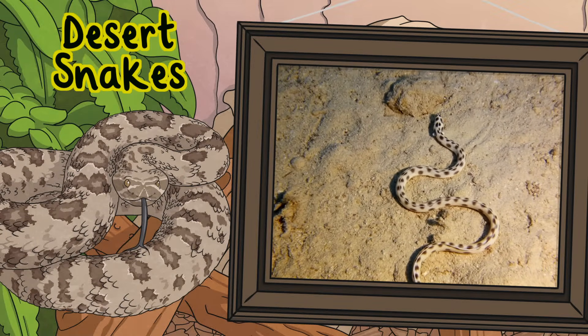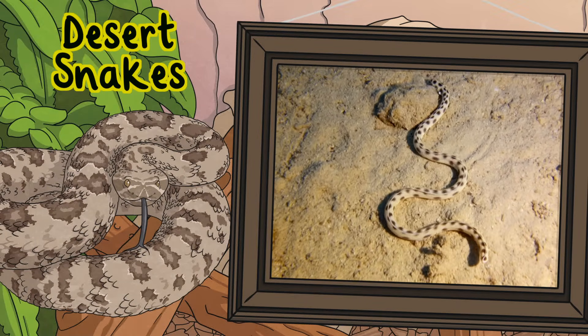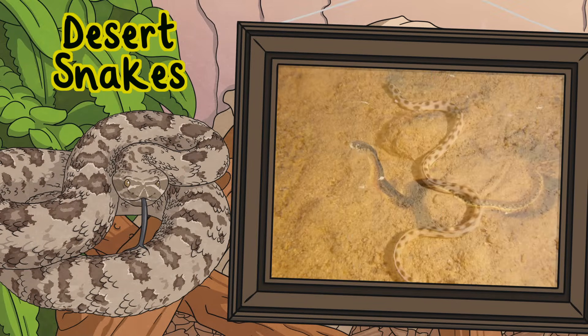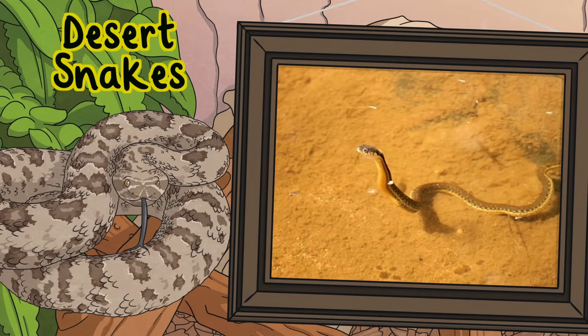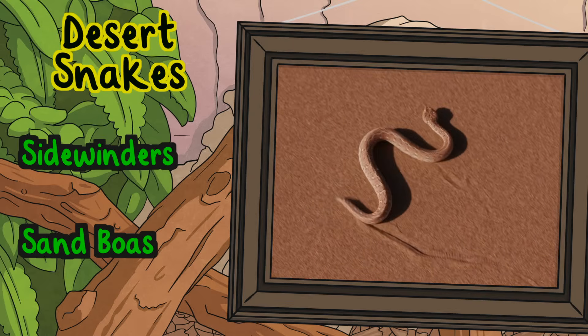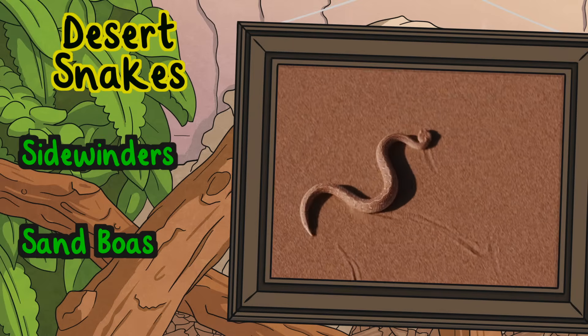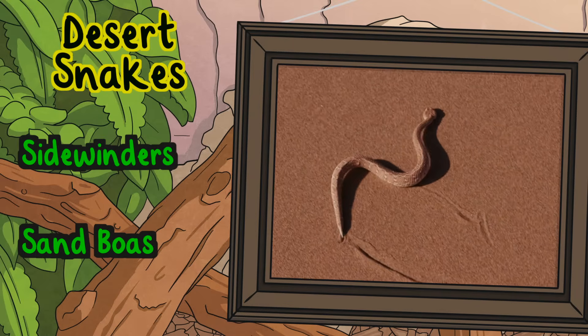Desert snakes. These snakes have adapted to dry sandy environments. These types of snakes include sidewinders and sand boas.